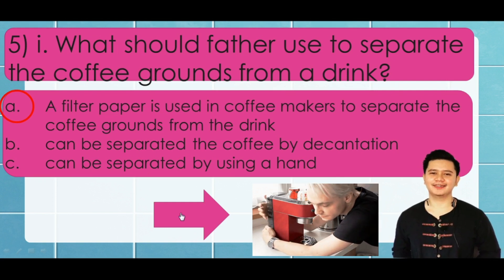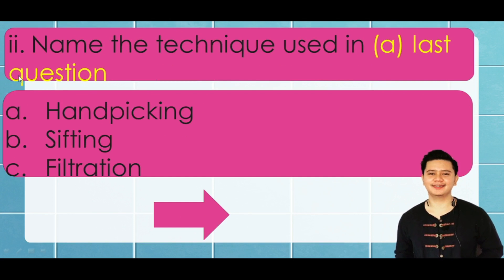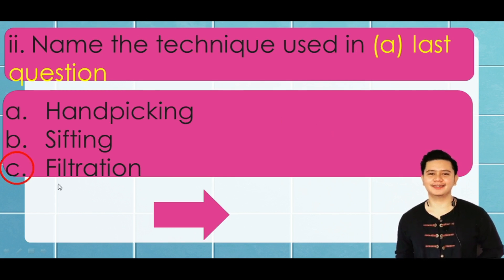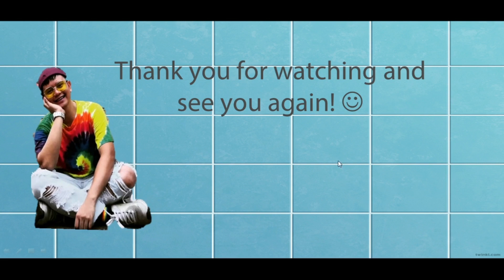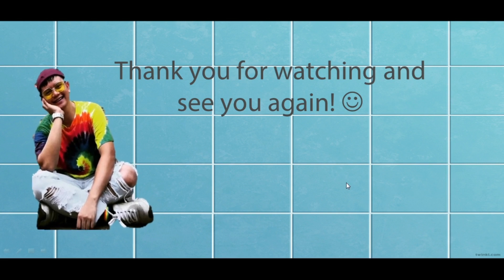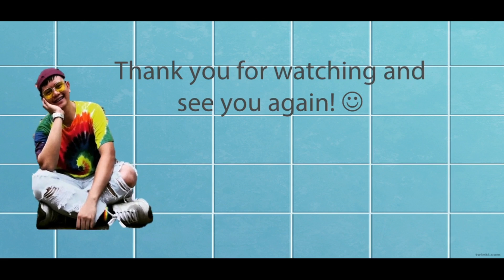The last question: name the technique used. The choices are a) hand picking, b) sifting, or c) filtration. The answer is letter c — filtration — as mentioned earlier. That's all for today. Thank you for watching, see you next week. Goodbye!